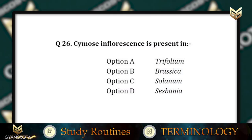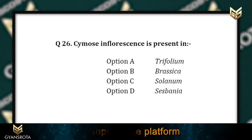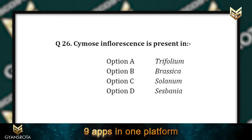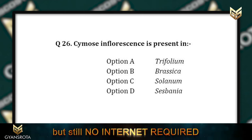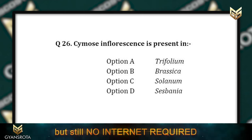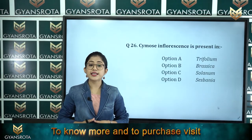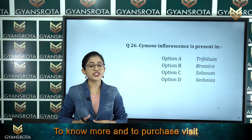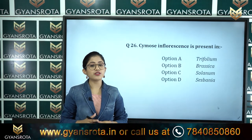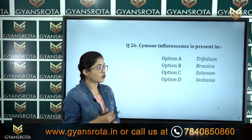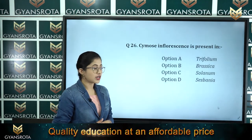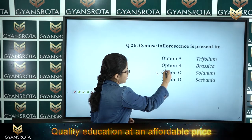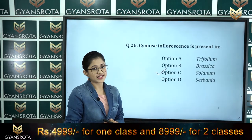Question number 26: Cymose inflorescence is present in — option A Trifolium, option B Brassica, option C Solanum, option D Saevinia. We have discussed cymose inflorescence in the chapter Morphology of Flowering Plants. It is present in Solanum, so option C is the correct answer.